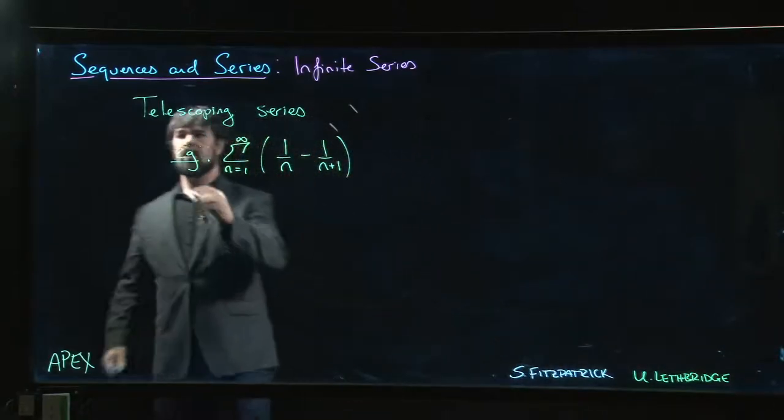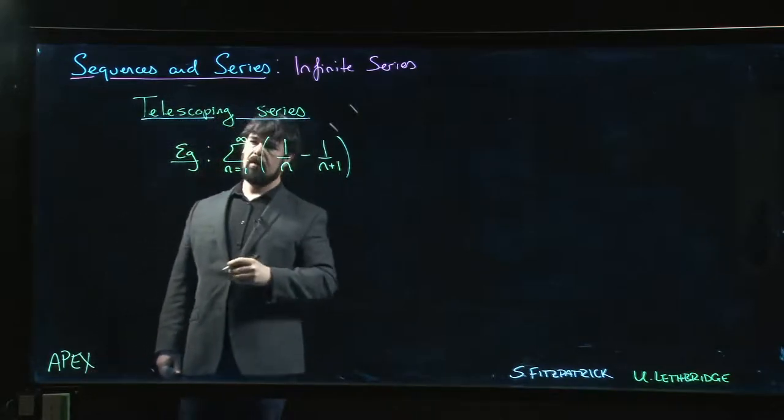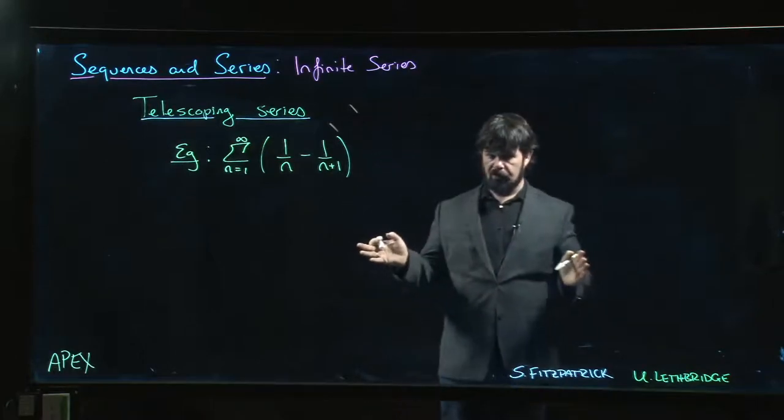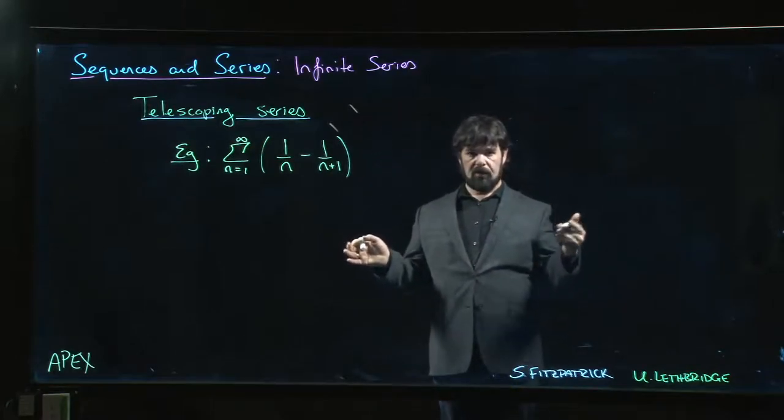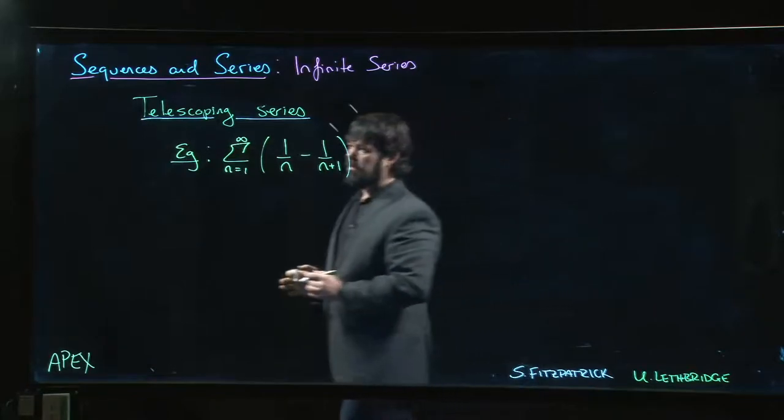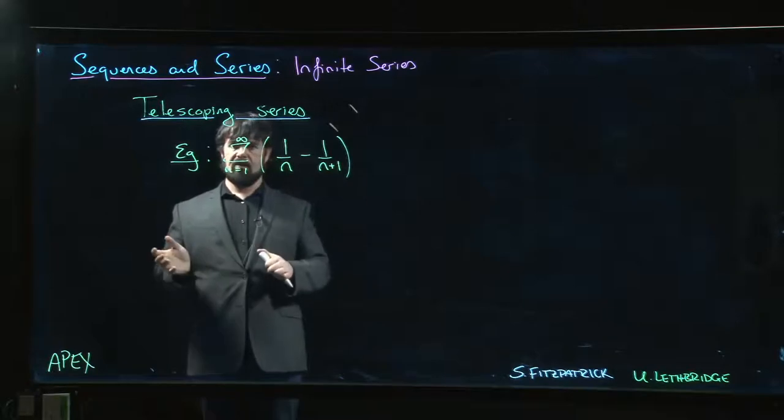So the next few examples we're going to look at deal with what are called telescoping series. A telescoping series is one where as we write out the partial sums, we find that there's a lot of cancellation. This cancellation within the sums allows us to evaluate the series.